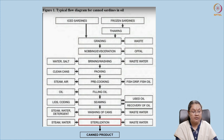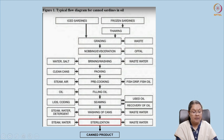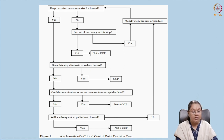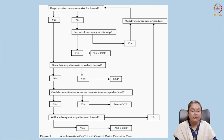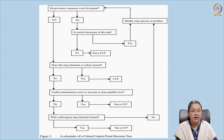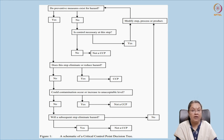Looking at the flow chart for canned sardine in oil, for example sterilization could be a critical point. We have to develop a decision tree — a critical control point decision tree — asking questions at each step. The first question is: do preventive measures exist for the hazard? If yes, we go to the next step. If no, we ask: is control necessary? If yes, we modify the process; if no, it is not a CCP.